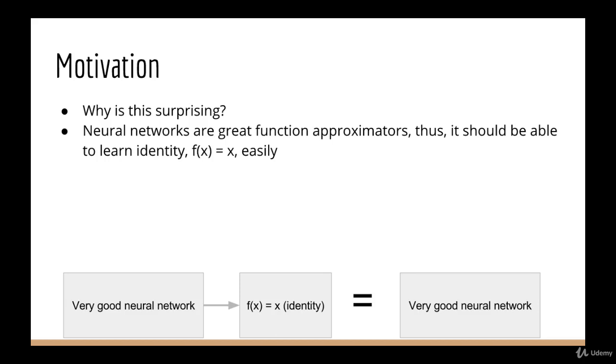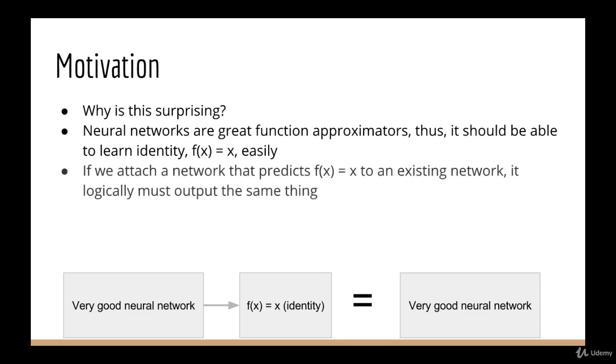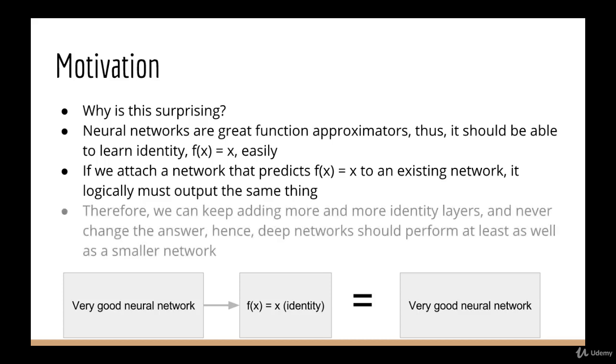So let's assume we have a neural network that does exactly this. We attach our identity neural network to our very good neural network. Logically, we know that this must perform exactly the same as the small neural network because the second part does nothing but pass the value to the end. Now suppose we add yet another identity network. This too should give us the same answer. So what one might deduce from this is that very deep neural networks are great. They should perform at least as good as a smaller neural network because each layer has the potential to just learn the identity function. So what's the problem with this?